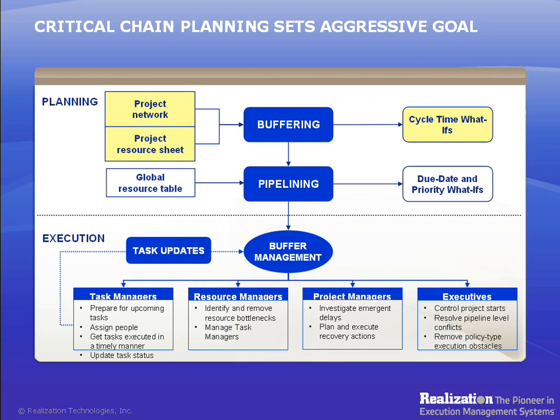When talking about the Concerto system, there are three main components of the Concerto software that correspond to the three parts of the critical chain solution in a multi-project environment. First, Concerto Critical Chain Client enables single project critical chain scheduling — that is, identifying the critical chain in the project network, adding buffers, performing global task duration reduction to extract hidden local safeties, and analyzing the critical chain project network to identify areas that can be improved to achieve a shorter cycle time.